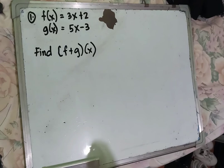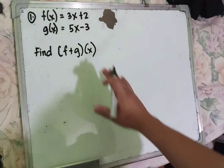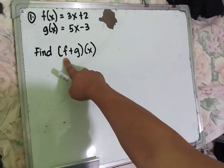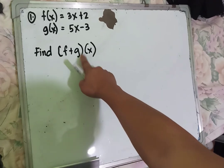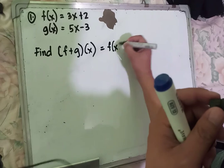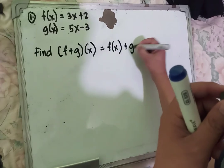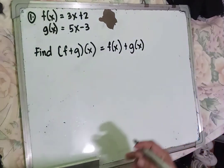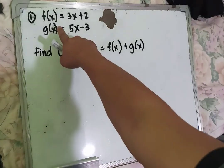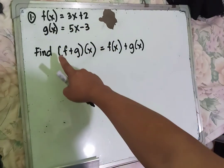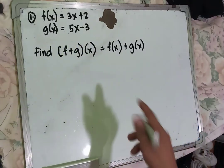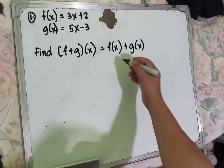The formula for finding the sum of the given functions is: the quantity of f plus g times x equals f of x plus g of x. Based on the given example, f of x is 3x plus 2 and g of x is 5x minus 3. Substitute these into the formula.